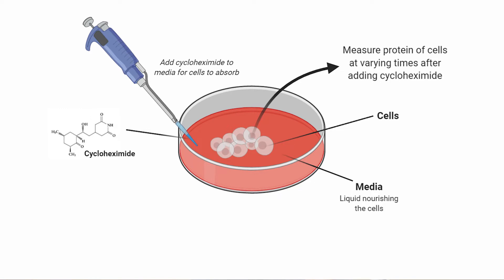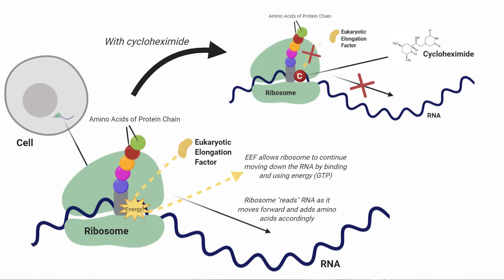What is cycloheximide doing in this case? Well, cycloheximide has a chemical structure that allows it to bind ribosomes, which are responsible for the synthesis of new proteins by linking together amino acid after amino acid until a protein chain is formed. Normally, this process goes uninterrupted until protein chains are completed and ready for processing. During this process, a factor known as eukaryotic elongation factor binds the ribosome and allows the use of energy to move the ribosome down its reading script, known as RNA, and attach the next amino acid.